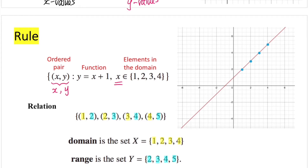So let's find some ordered pairs we can plot on this graph. When x equals 1, y equals 1 plus 1, which is 2 — that's our first ordered pair. By substituting each x value into the function to find the corresponding y value, you can find three other points. Each x value should correspond to the given domain in the question. Once we have the four ordered pairs, we can start to plot these points on our graph.